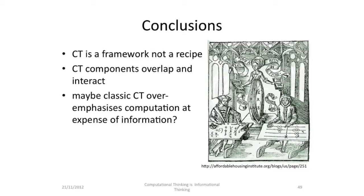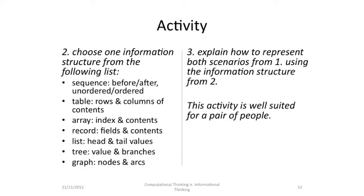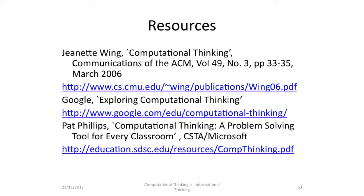I'm going to finish by suggesting an activity. Pick two very different scenarios from the list that I went through earlier — here's all the lists again. And then pick one of the information structures from the ones that I showed you. Then explain how to represent both of the scenarios in step one using the information structure from step two. This is a very good activity for a pair of people to work on together, and then to come back to a group and describe the different things that you've come up with. There are lots of resources on computational thinking — Jeanette Wing's foundational paper is available from the Communications of the ACM, and there is lots of useful information available from Microsoft and also from Google. Thank you very much.